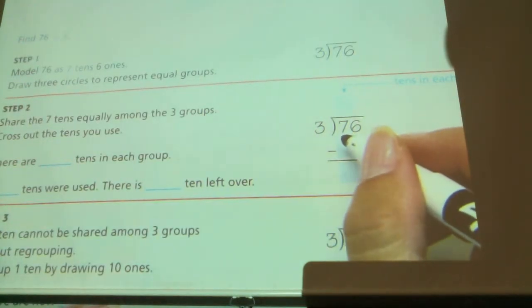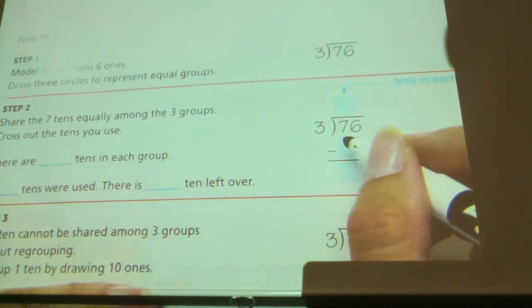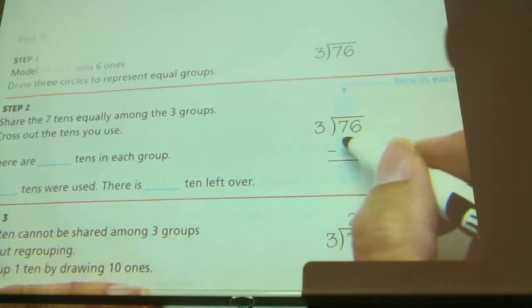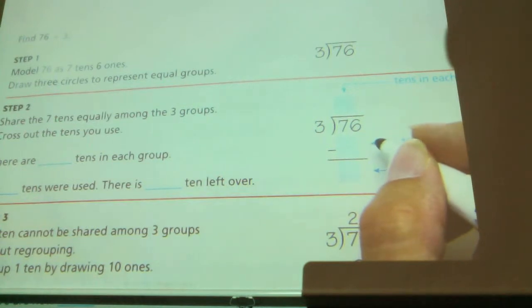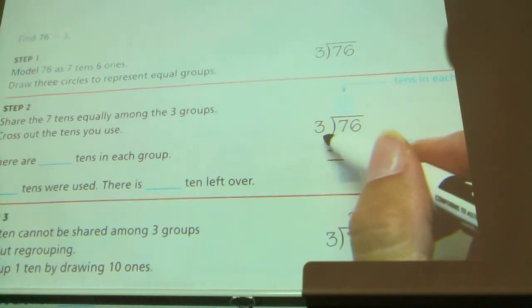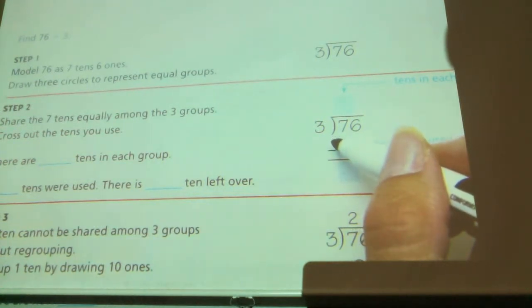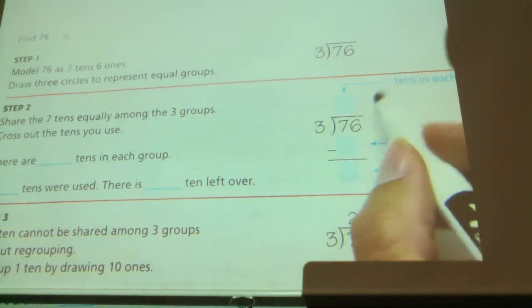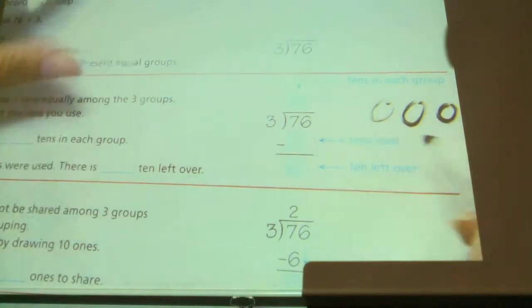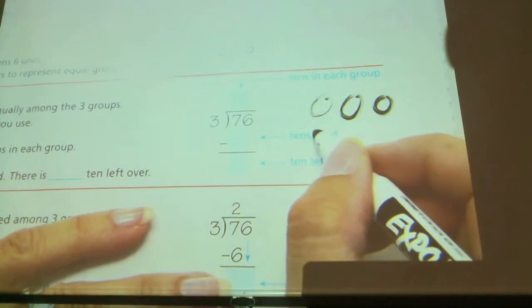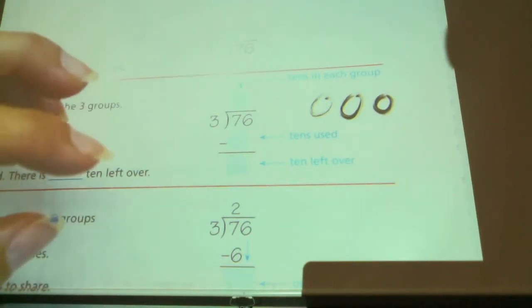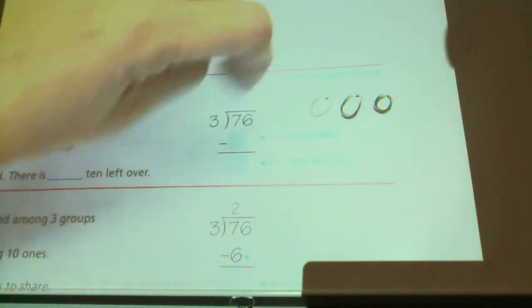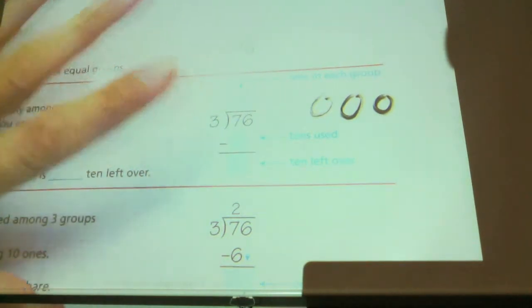I can look at the seven and think of those as seven tens, seven ten sticks. So eyes are up here on my board. I'm looking at the seven and I'm thinking of those in my head as seven ten sticks. If I were to divide those into groups of three, three groups, how many ten sticks would I get in each group? I want everybody to think about it for a minute. I have three groups, right? If I have three groups and I have seven ten sticks, how many tens am I going to get in those three groups evenly? Can I get all seven equally distributed? No.